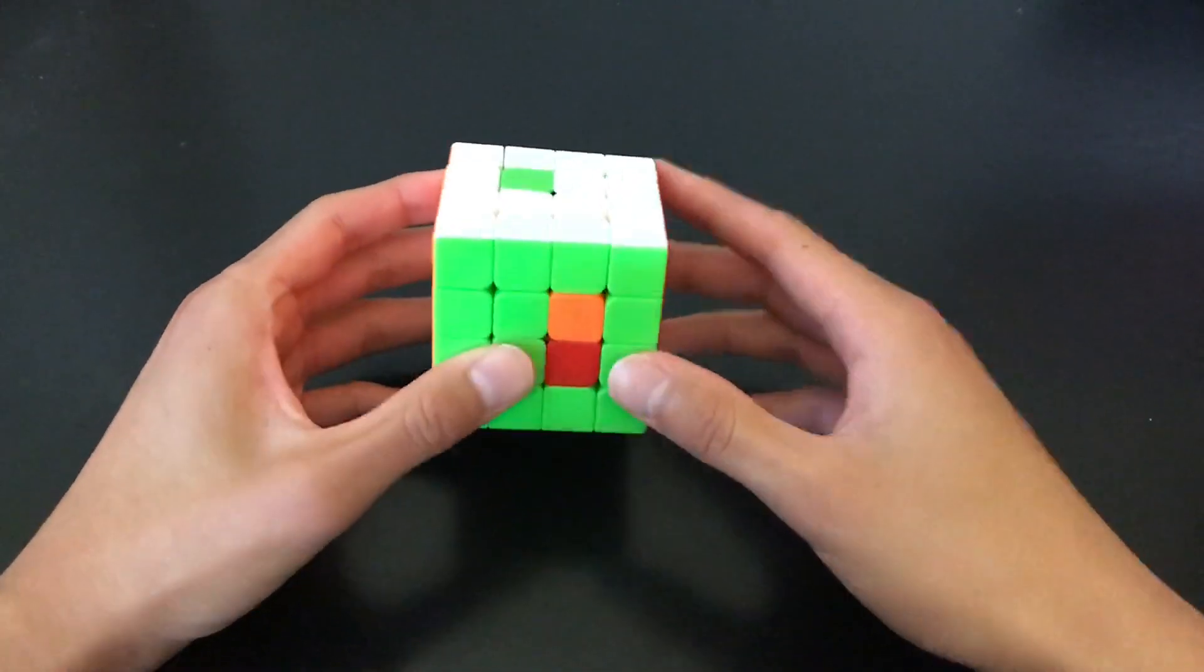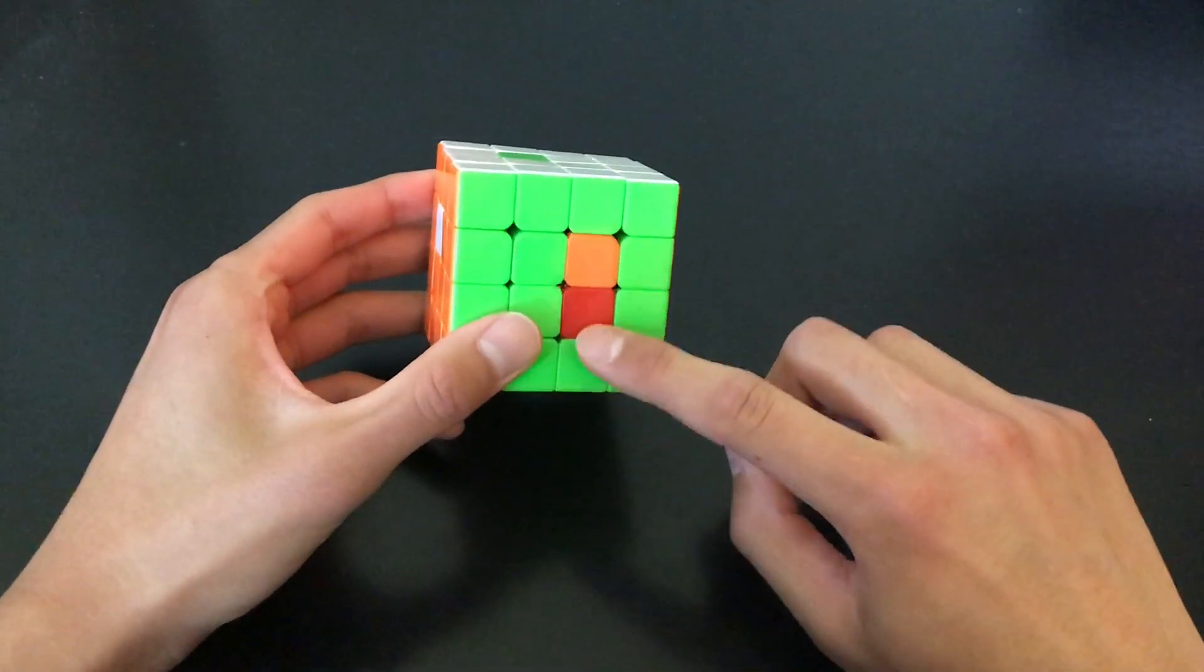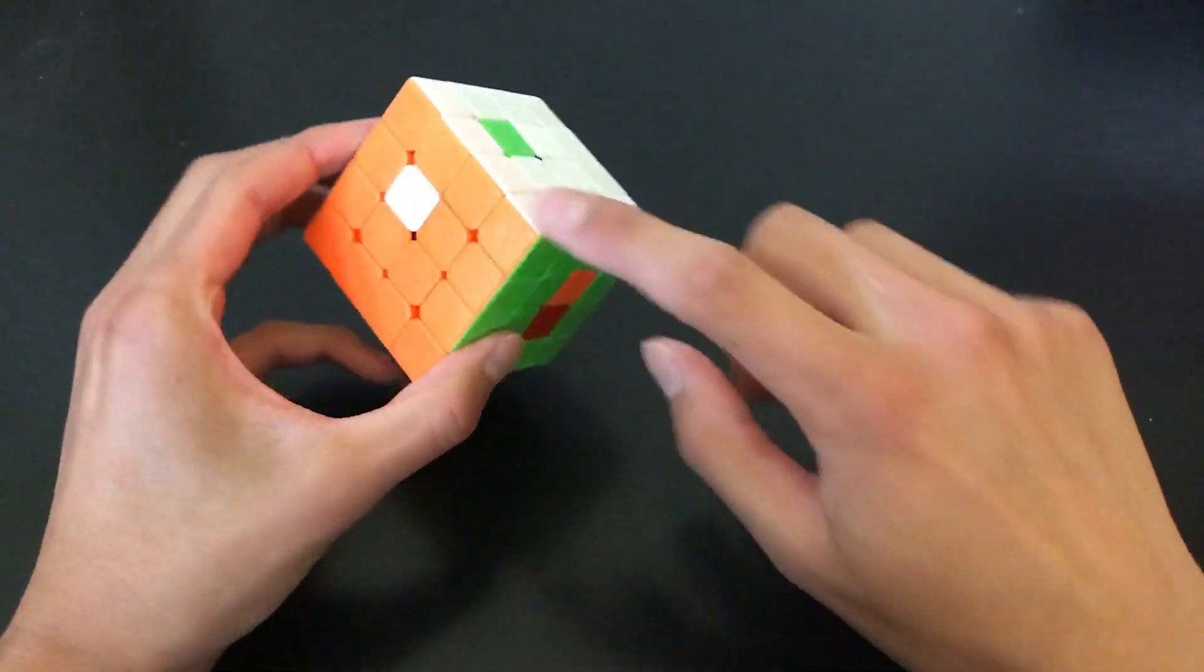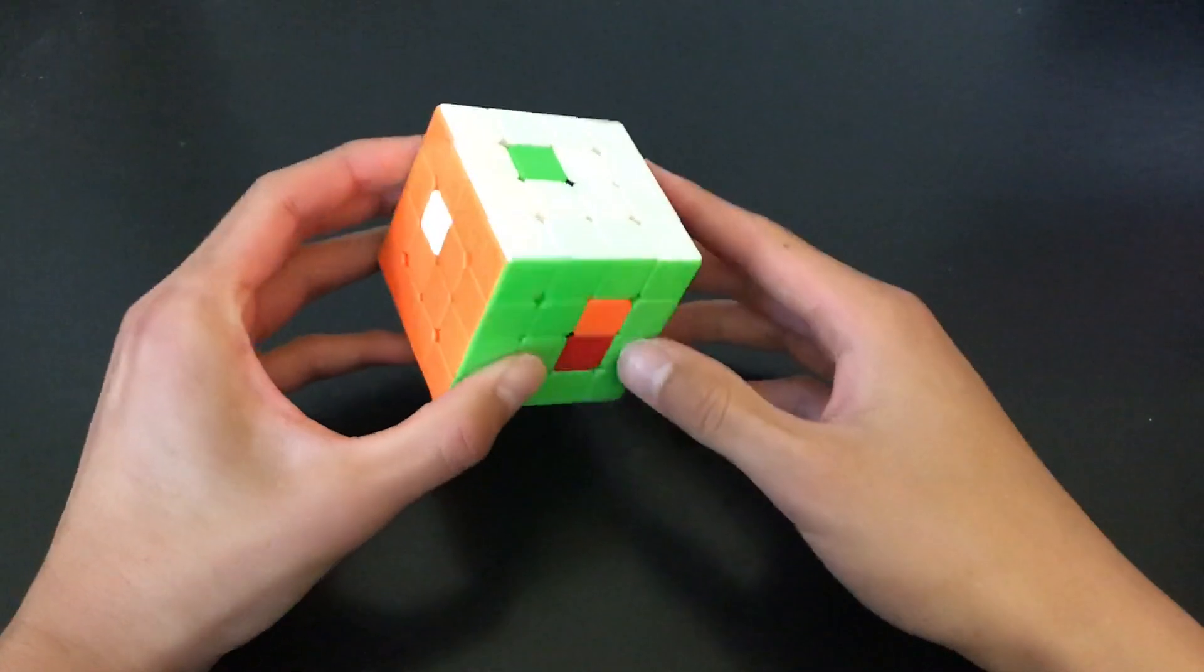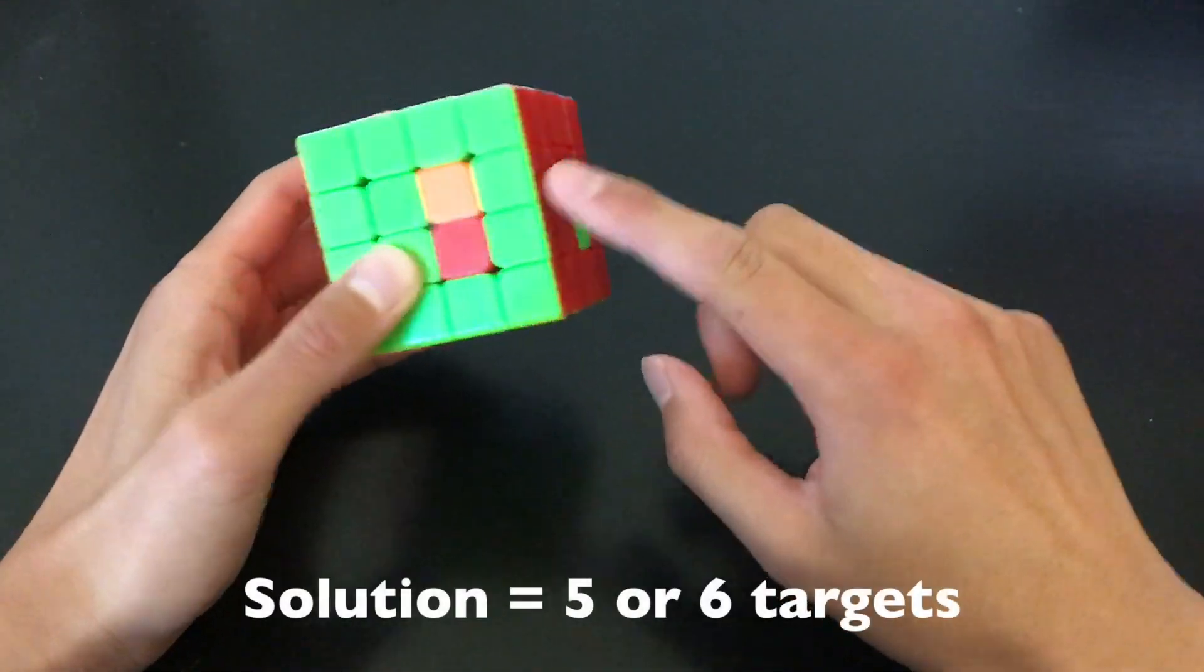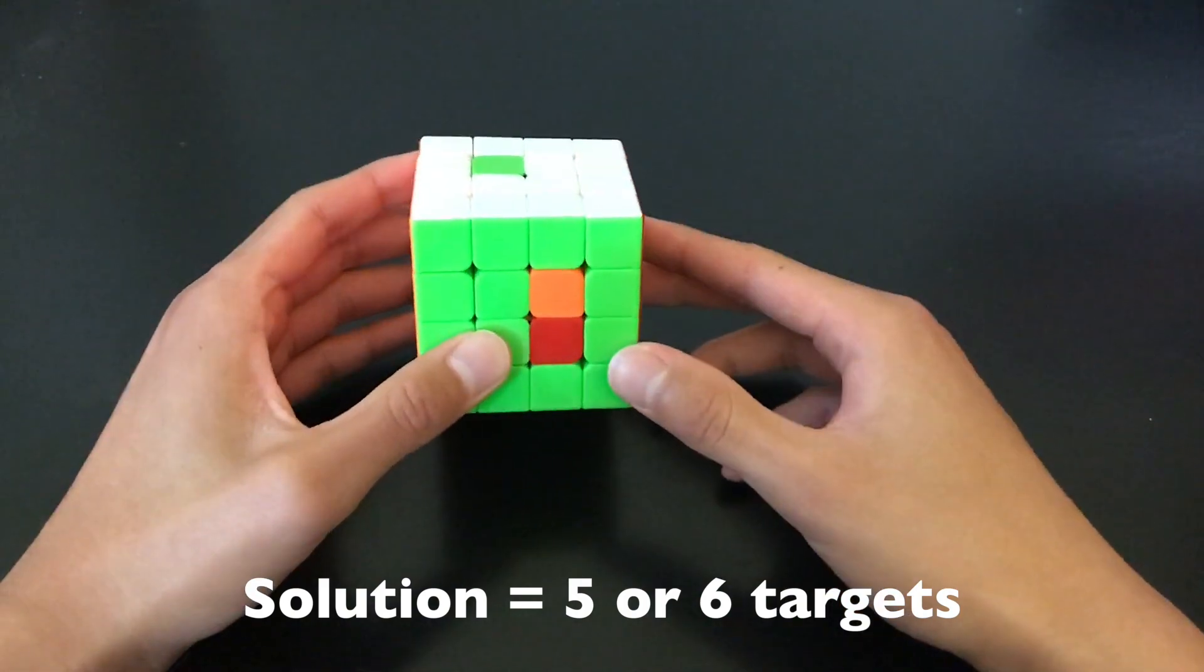Notice here that we have two choices for this green sticker. It could go here or here. However, if we stick to a fixed order, we will shoot here first, which will then go here, giving us a cycle break. We will then break into a new cycle by shooting here, here, and then back to here, giving us this solution.